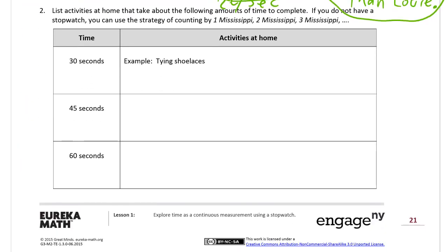Number two. List activities at home that take about the following amounts of time to complete. If you don't have a stopwatch, you can use a strategy of counting by 1 Mississippi, 2 Mississippi, 3 Mississippi. Because it takes about a second for you to say a number in Mississippi. If you count, you can pretty much be counting seconds pretty closely.